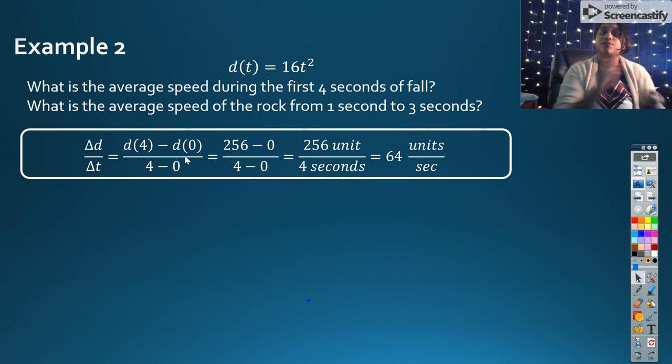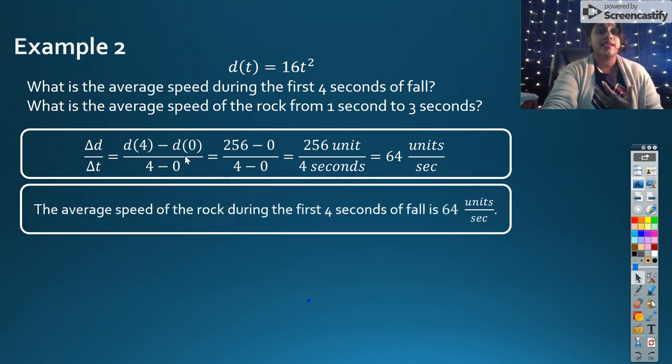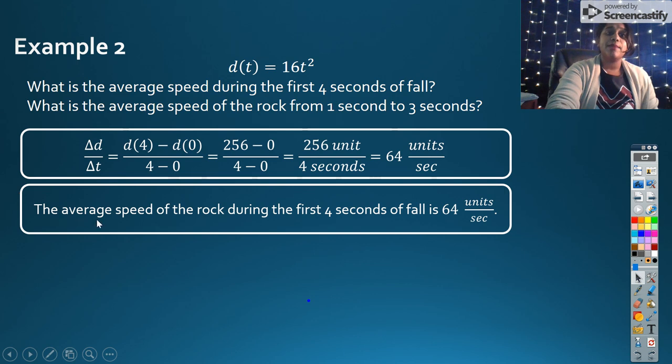So first four seconds is from 0 to 4. I plug that in and I get 64 units per second. My literature statement is the average speed of the rock during the first four seconds of fall is 64 units per second. Again, I mimicked the language of the question. I answered the question and I did not forget my units.